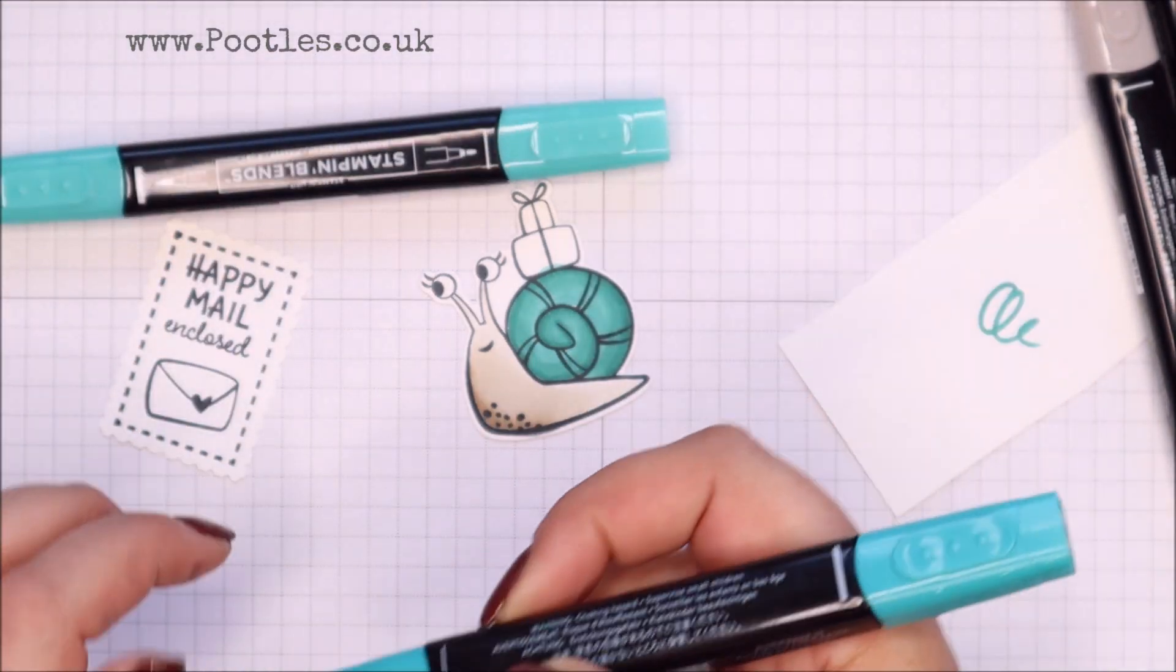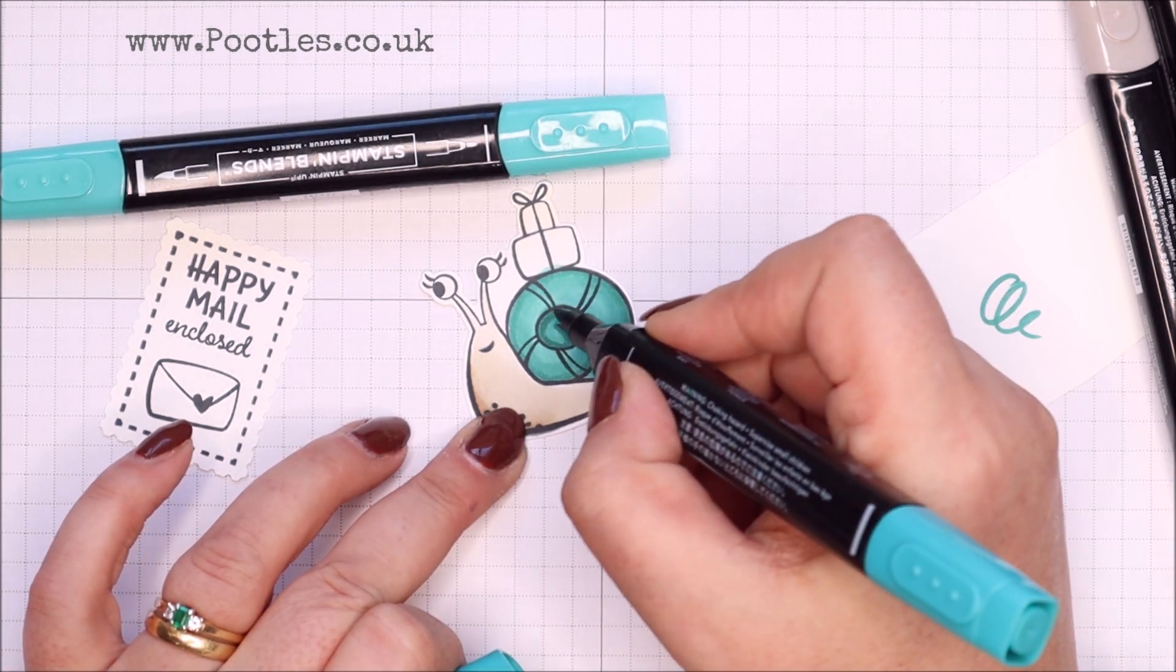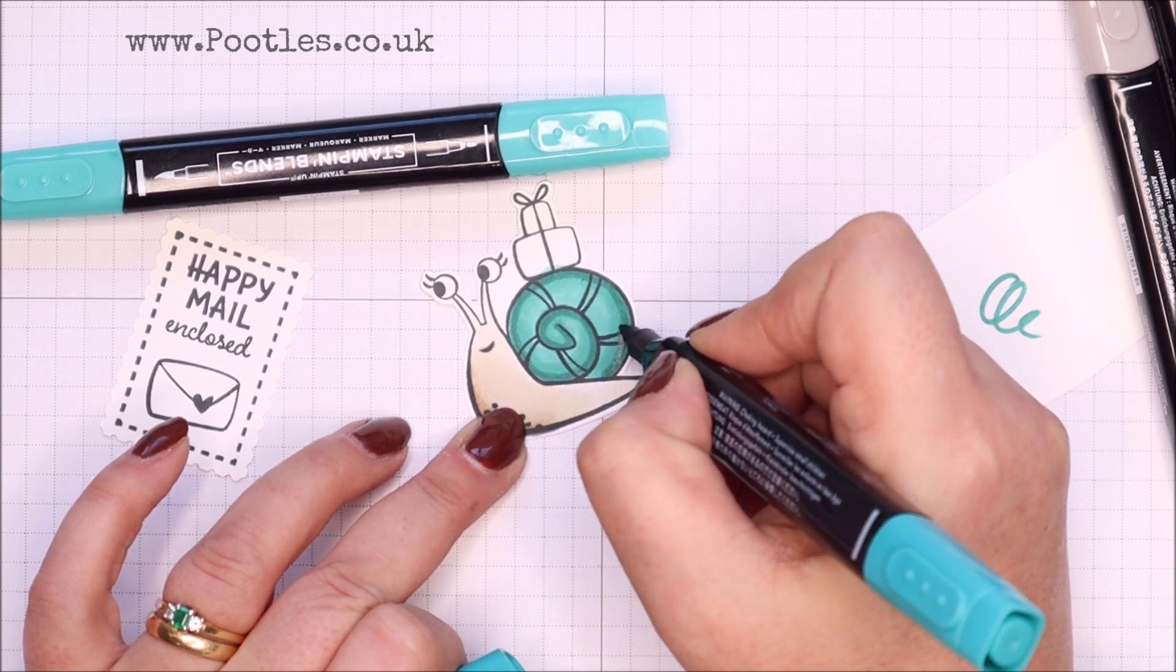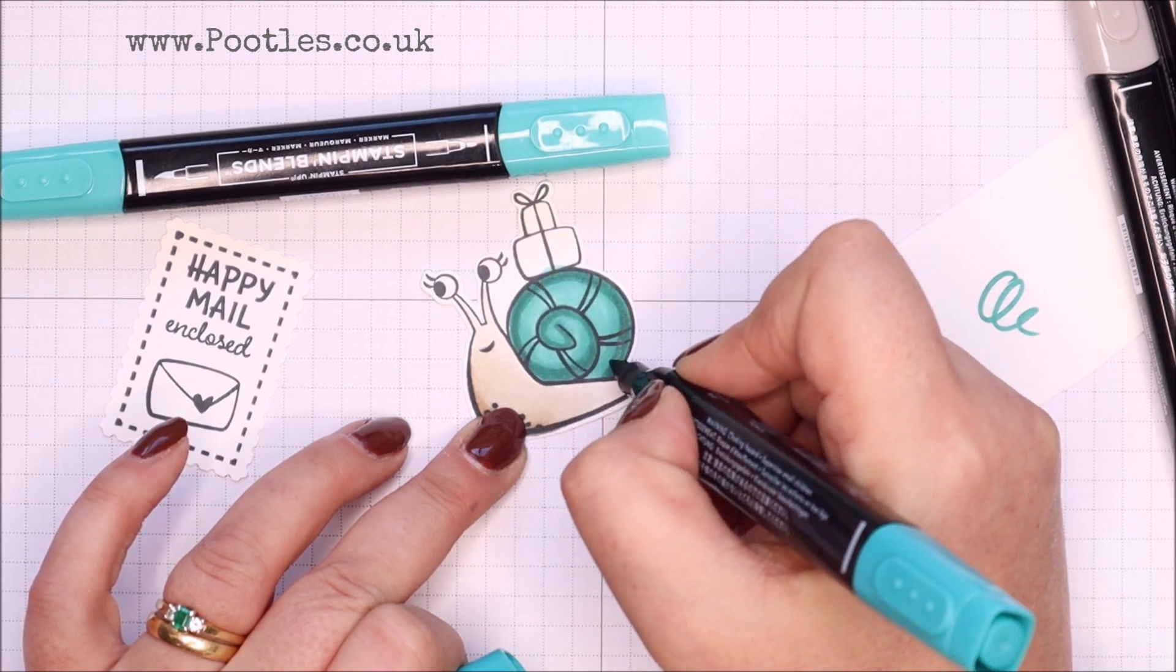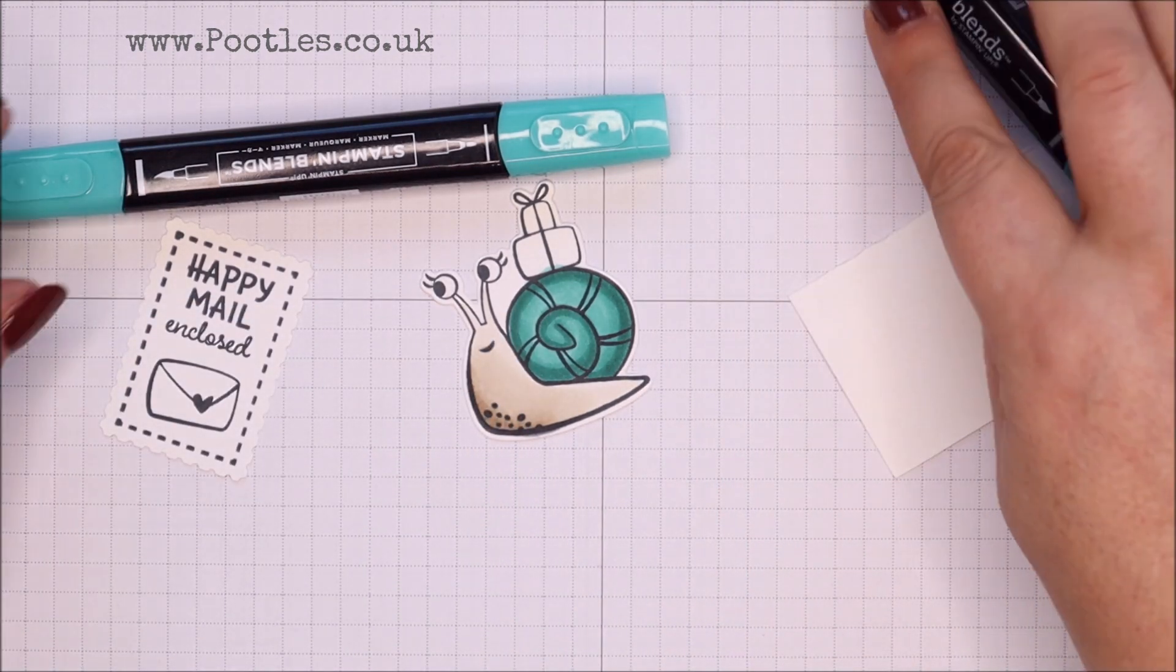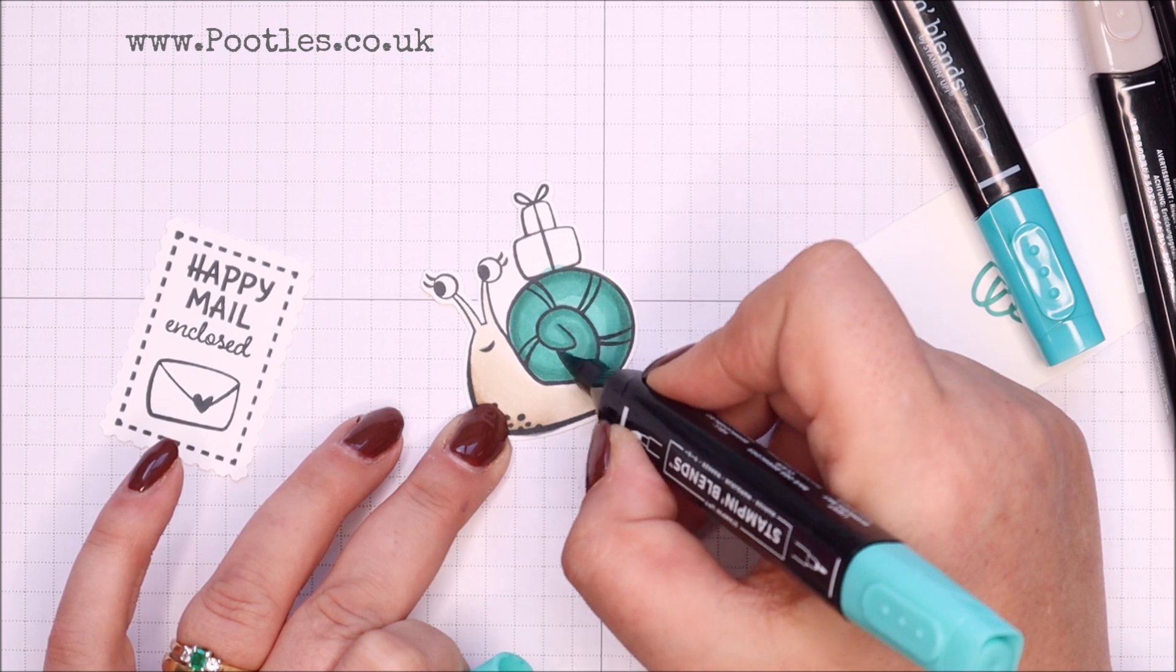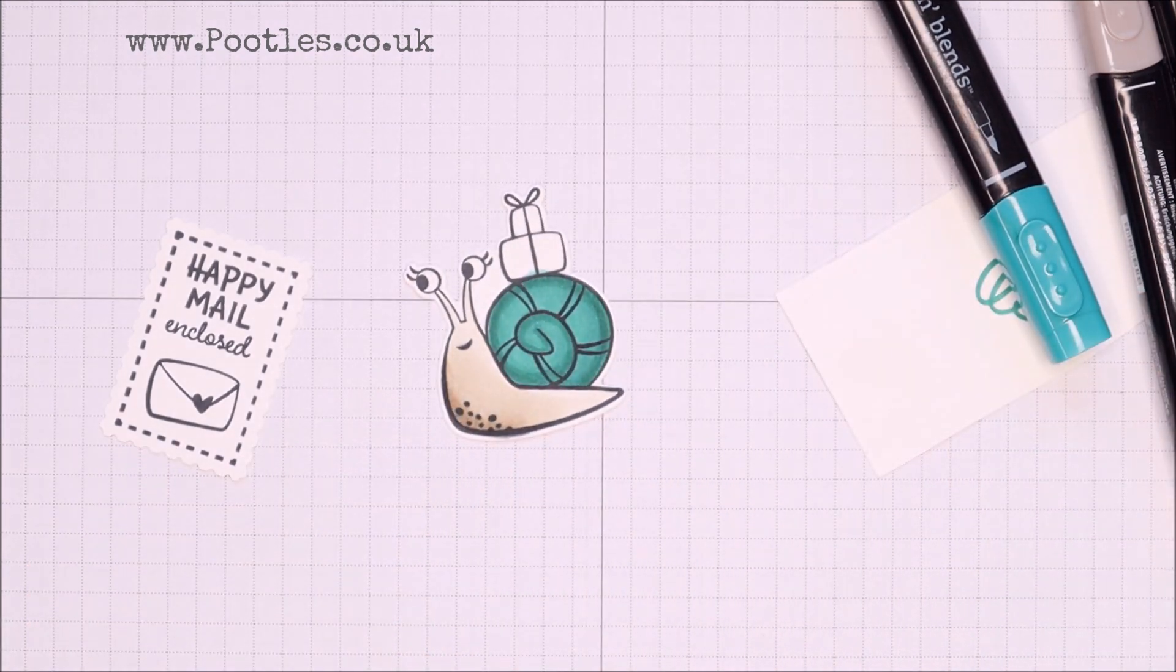And then I want to come back in with the dark. Just one more time. I'm just going to thicken that slightly. And you can see the definition there. But as I blend it. All that lovely ink is going to move around. How fab is that?